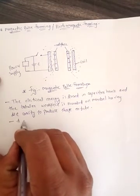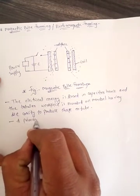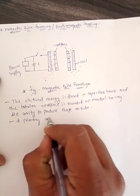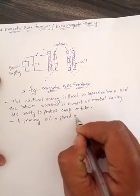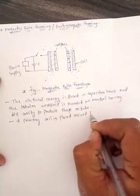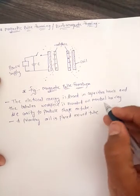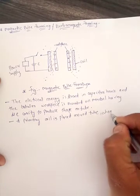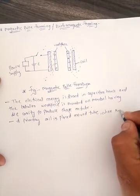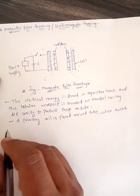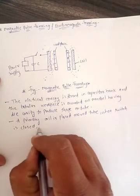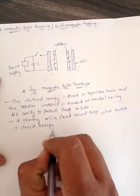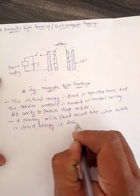Primary coil is placed around tube. When switch is closed and energy is discharged.